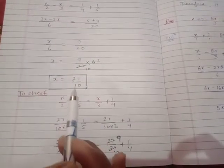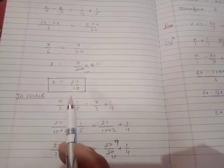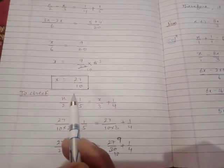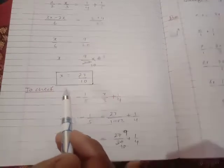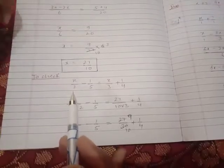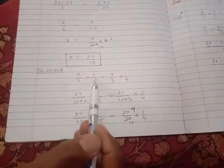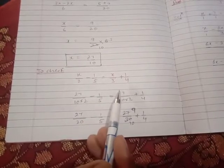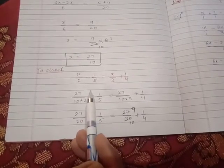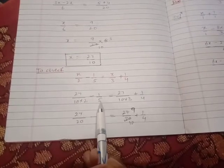So we will check this value of x whether it is correct or not, so we will verify it. x/2 - 1/5 = x/3 + 1/4. We will put the value of x in place of x: 27/10 ÷ 2 - 1/5 = 27/10 ÷ 3 + 1/4.